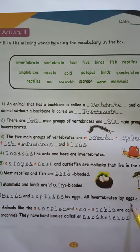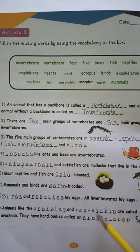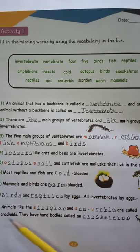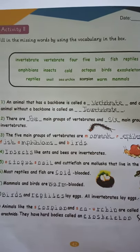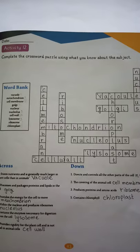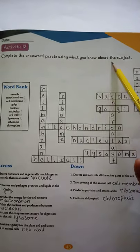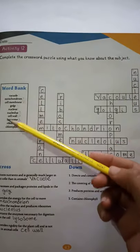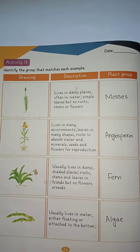Birds and reptiles lay eggs; all invertebrates lay eggs. Animals like scorpions and sea urchins are called arachnids and they have hard bodies called an exoskeleton. Activity number 12 is to complete the crossword puzzle using the given word bank.